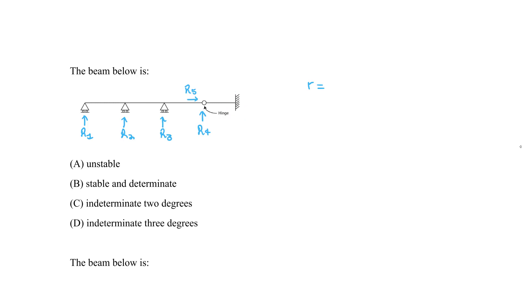The fixed end has three reactions: R6, R7, and a moment reaction — we'll call it moment eight. So we have a total of eight reactions.